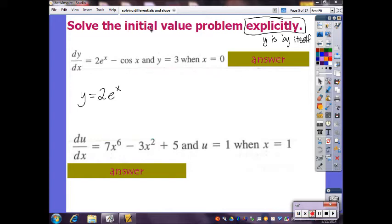In the directions it says solve the initial value problem explicitly, and in class I explained to you guys that explicit means y's by itself, as opposed to implicit which means x and y are together in the equation. So it just means after you get your particular solution, make sure y is solved for.